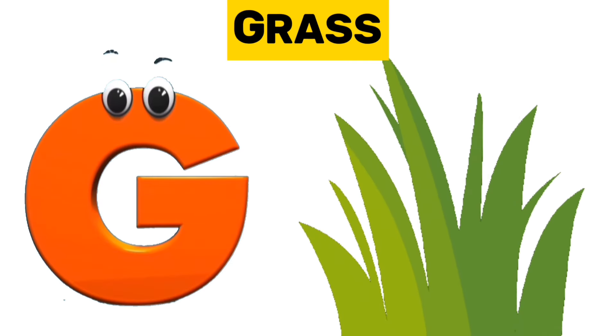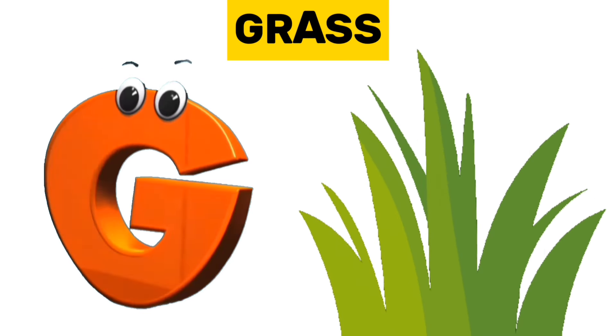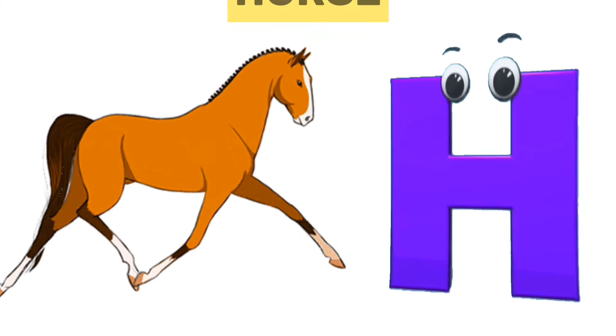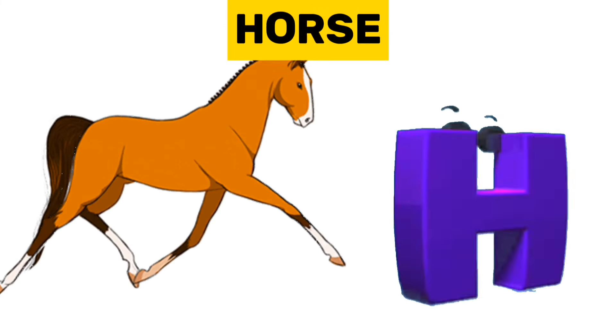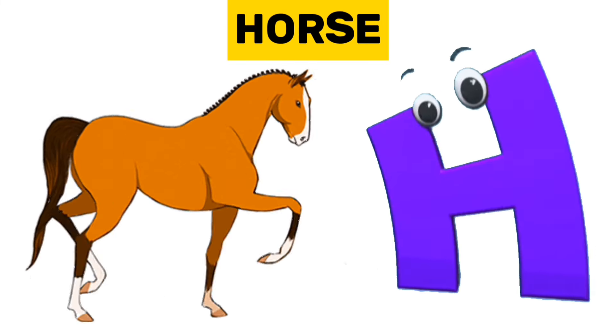G is for grass. G, g, grass. H is for horse. H, h, horse.